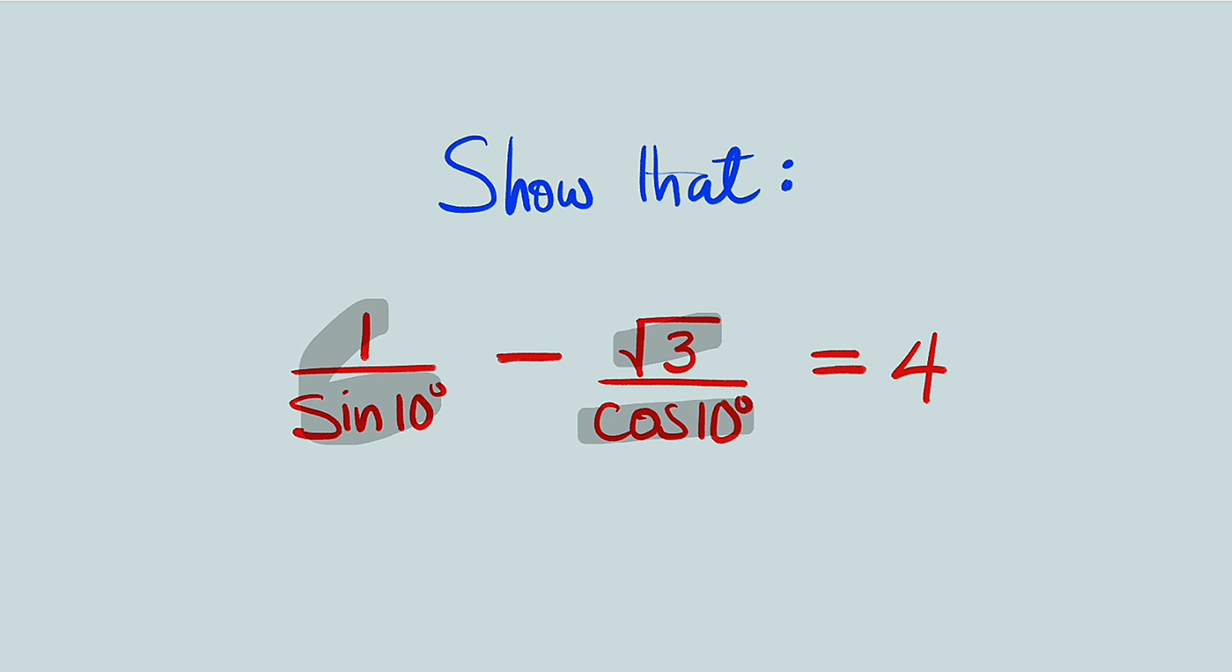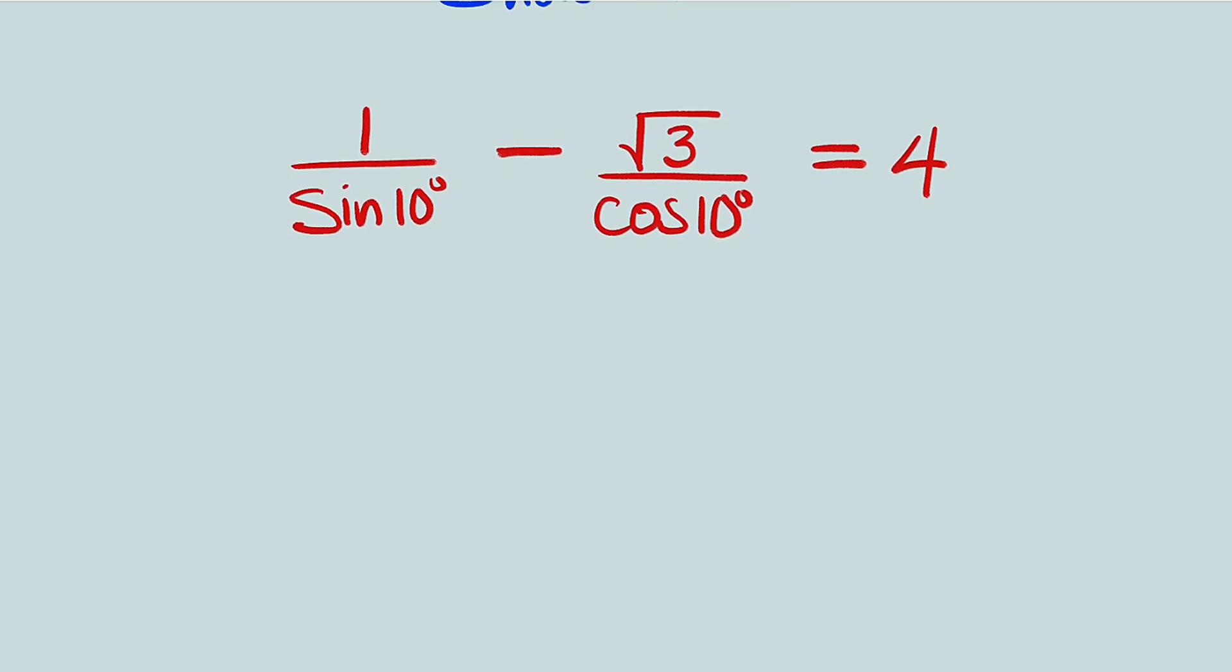What we are going to be doing here is to simplify the left-hand side, which is the trigonometric expression, and see whether we are going to get 4 or not. Let's get started with the solution. First of all, let us simplify the left-hand side.